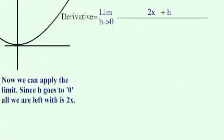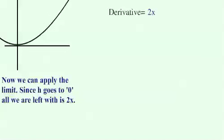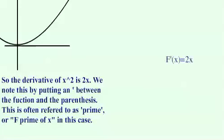We can then factor out an h, which we can cancel with the h in the denominator of the equation. Now that we no longer have h in the denominator, we can apply the limit. We couldn't have done this before because h going to zero would have made us divide by zero, which is not allowed. We're left with 2x — so the derivative of x squared is 2x.